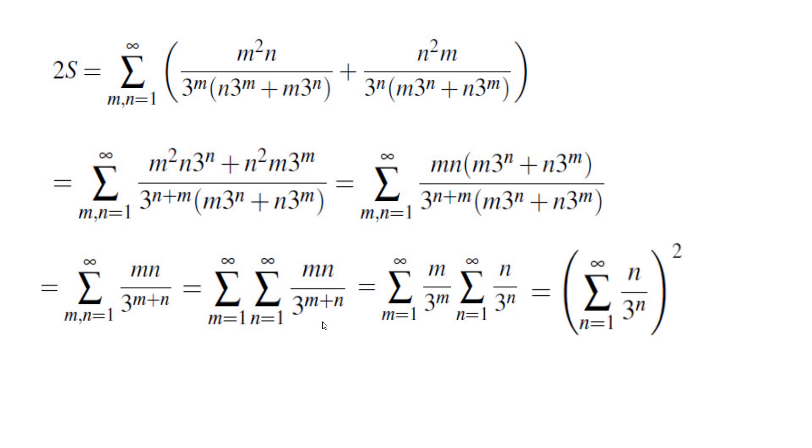And that gives us the product of two sums, which means this whole thing is the same as the sum of n over 3 to the power of n, all squared.